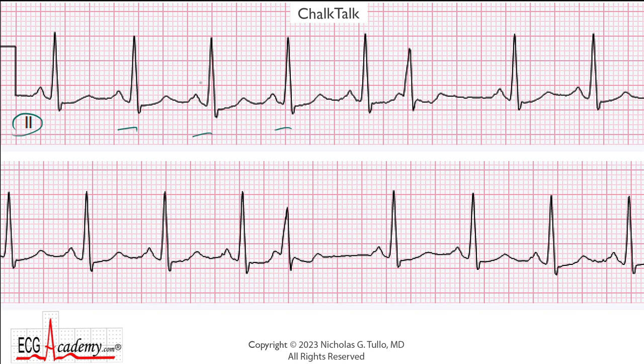We know what an FLB is — it's a funny-looking beat, but it clearly comes early, and then it's followed by a couple of other normal-looking beats, and down here it's the same thing. You have this premature beat. Let's take a look at the normal beats first and measure some intervals and do some basic stuff here.